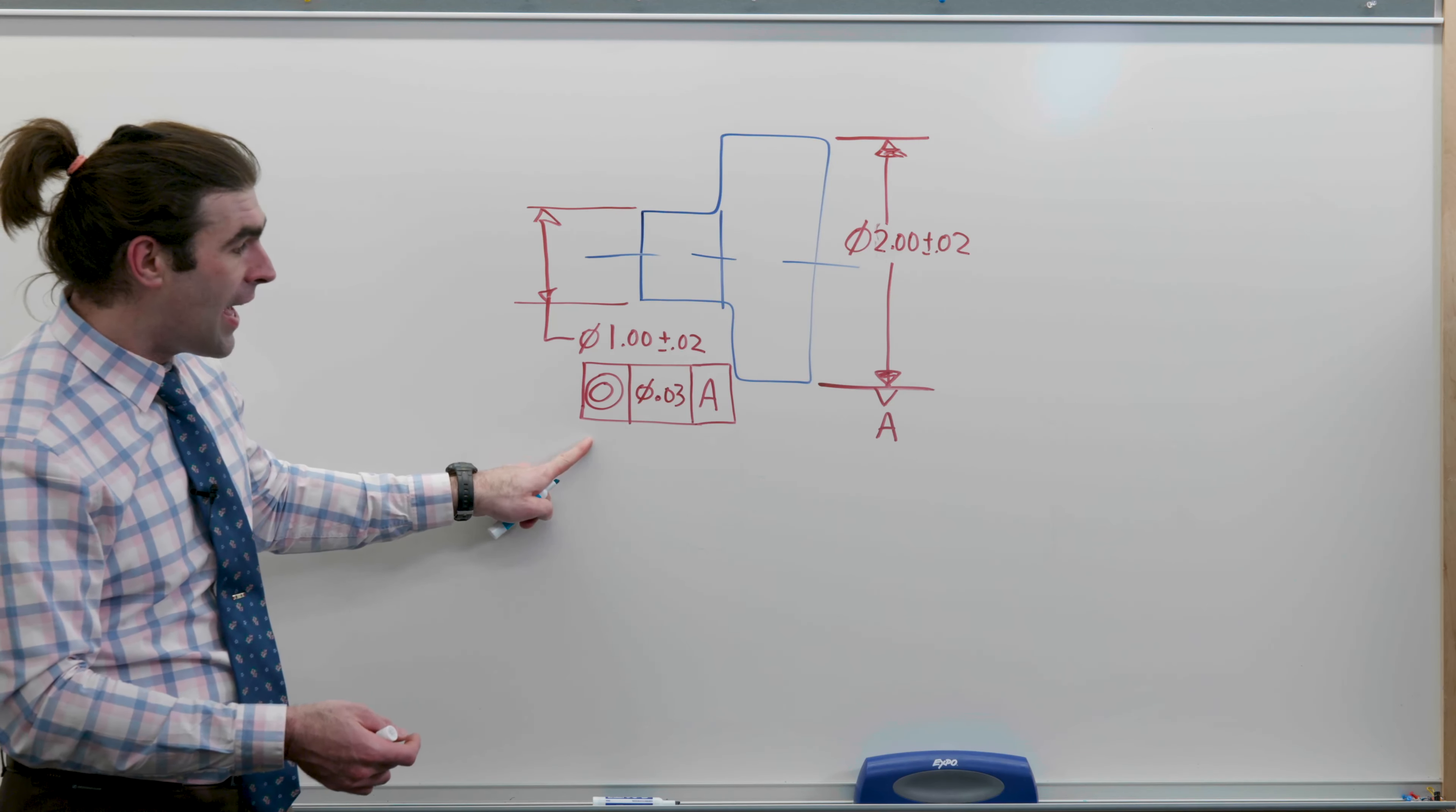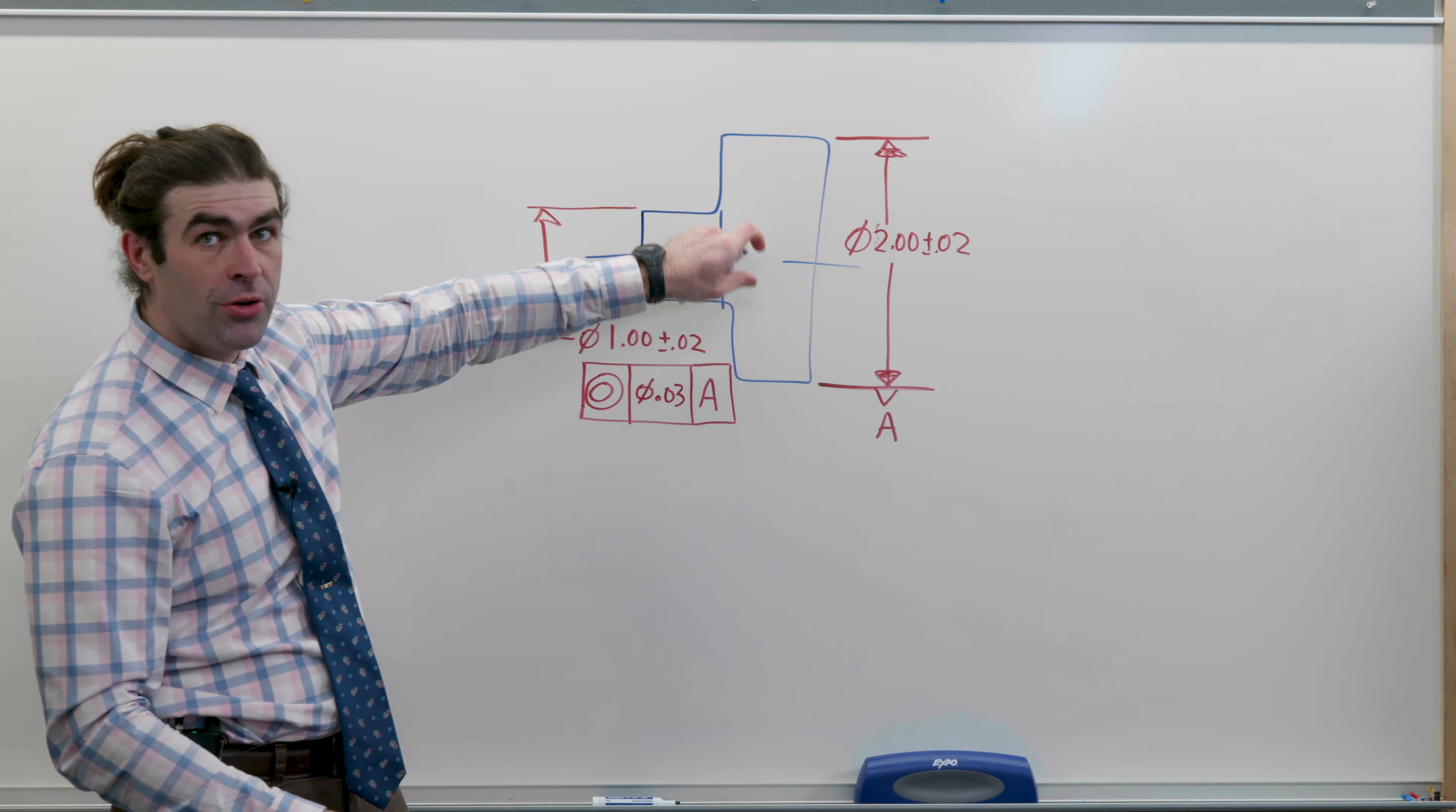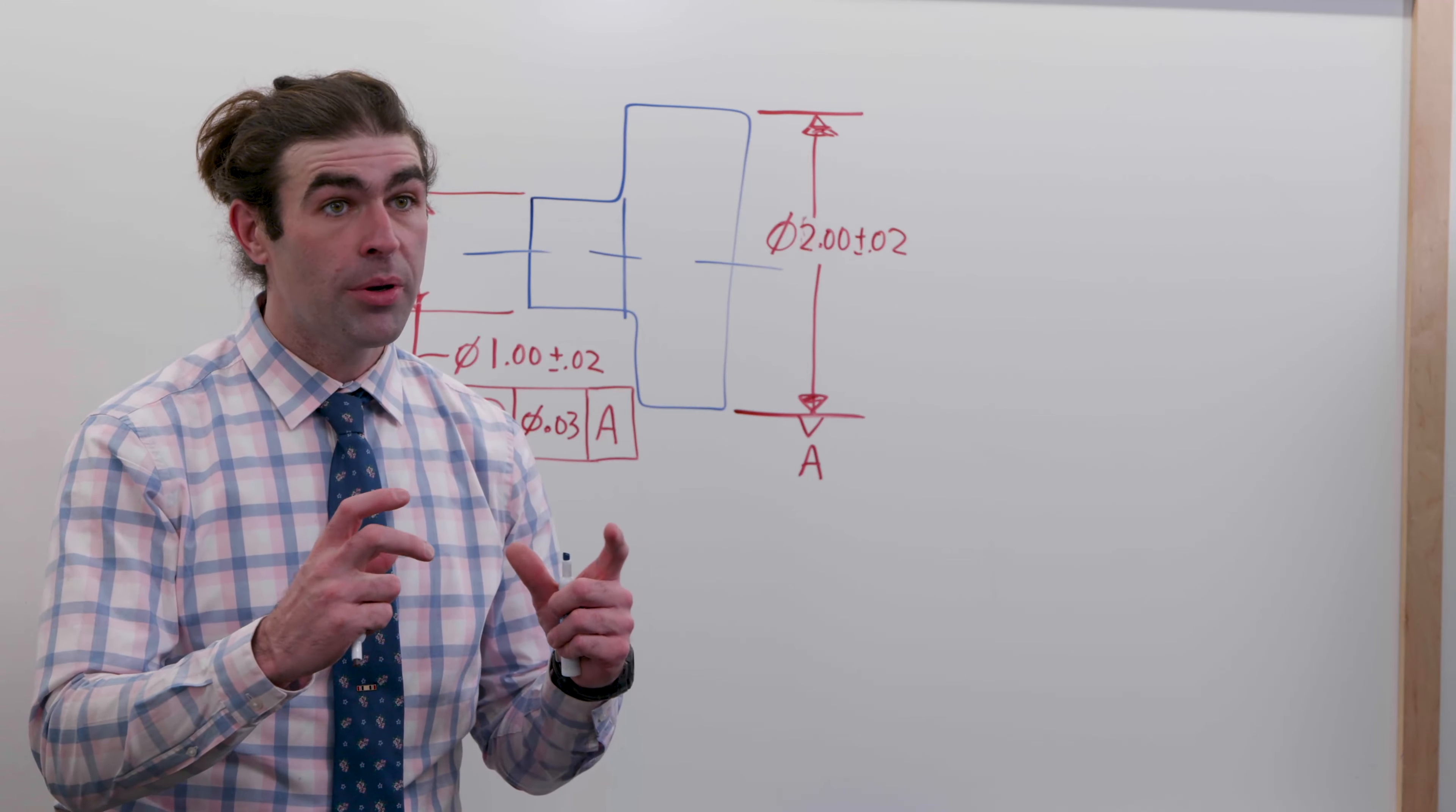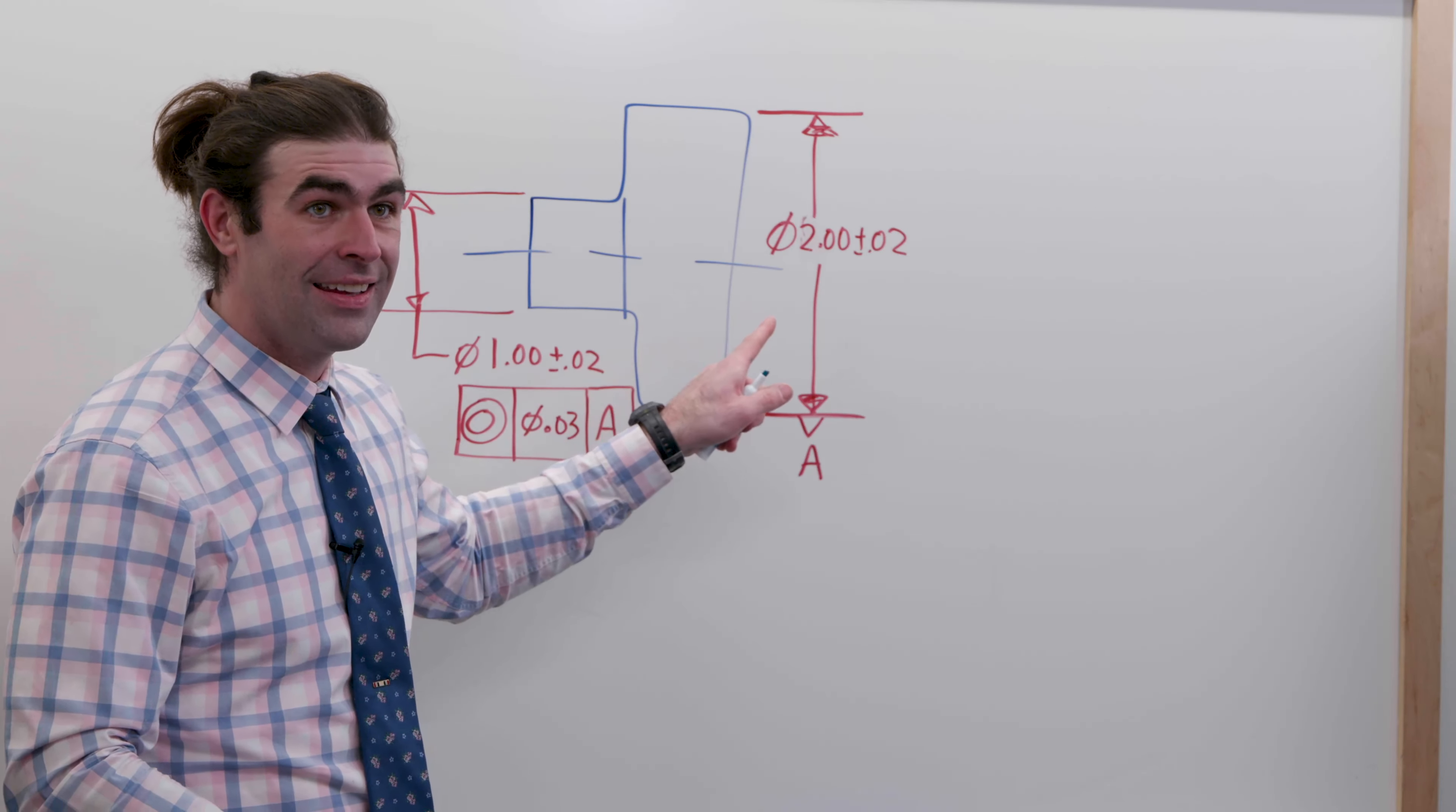We're going to identify that as being concentric to this datum. At inspection, because it's RFS, we need to capture the datum with maximum contact. Think chuck collapsing on it or a collet. Sometimes it can be simulated with V-blocks if that's all you have, but you want to make sure that axis is captive. Then we'll measure the derived median points while that axis is captive.